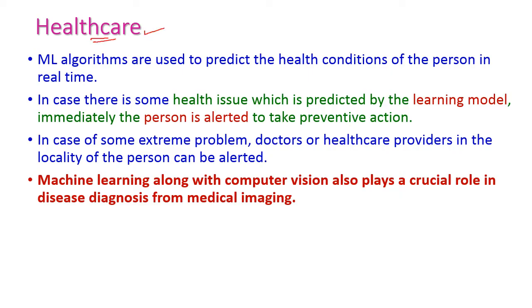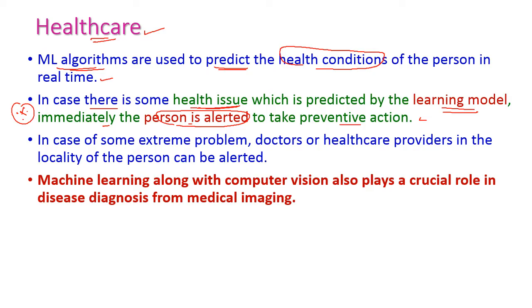Machine learning algorithms are also very helpful in healthcare industries. They are used to predict the health condition of a person using medical images. When health issues are detected by the learning model, the person is immediately alerted to take preventive actions. In extreme cases, the doctor or healthcare providers in the locality of the person can be alerted to save them. Machine learning along with computer vision plays a vital role in disease diagnosis from medical imaging.